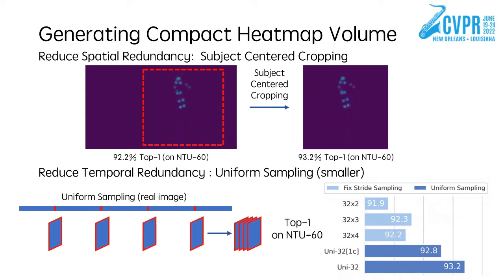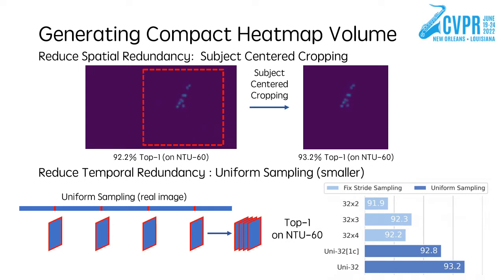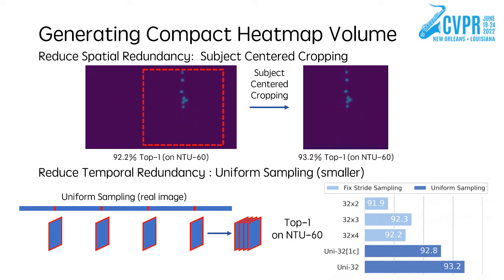To reduce temporal redundancy, we use uniform sampling to replace the commonly used fixed-stride sampling. To get an n-frame clip, we divide the video into n equal-length segments and randomly sample one frame from each. We find this new strategy is especially beneficial for skeleton action recognition.